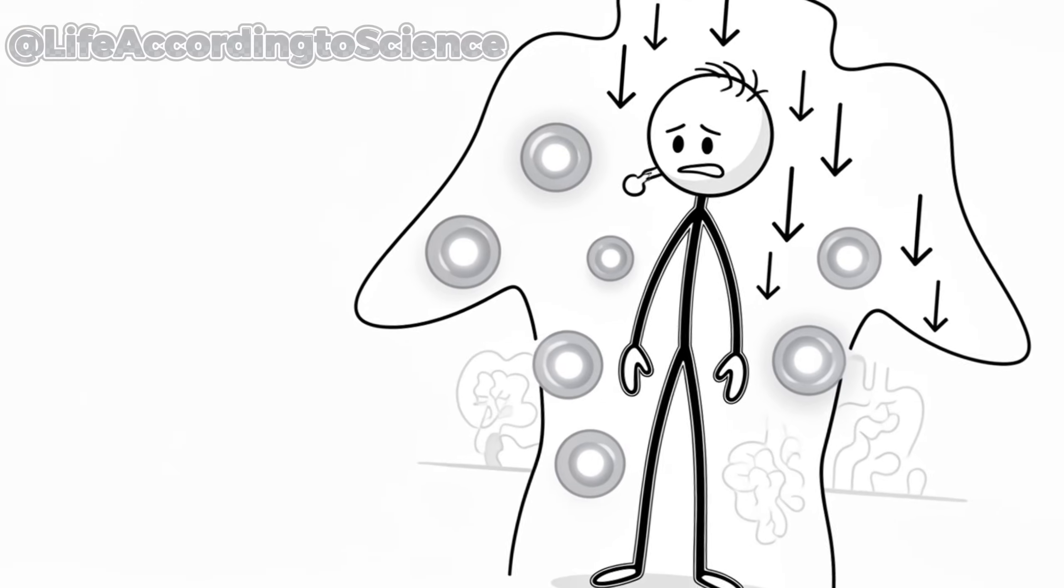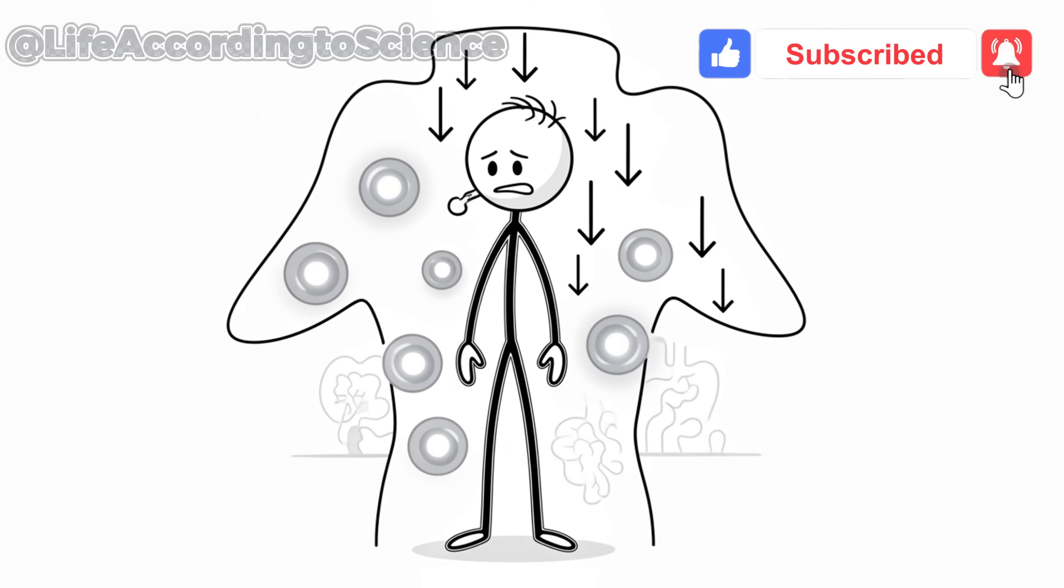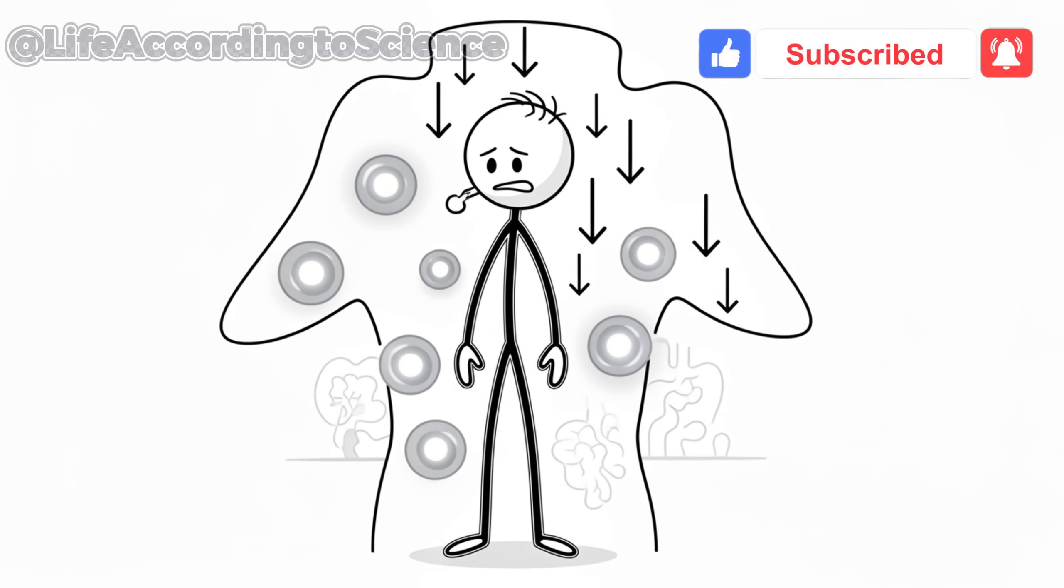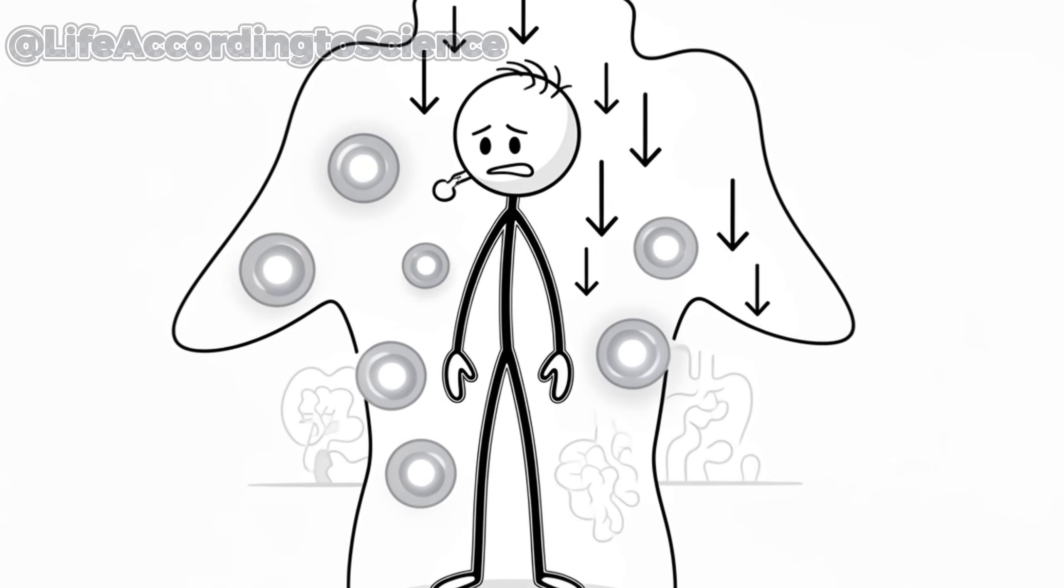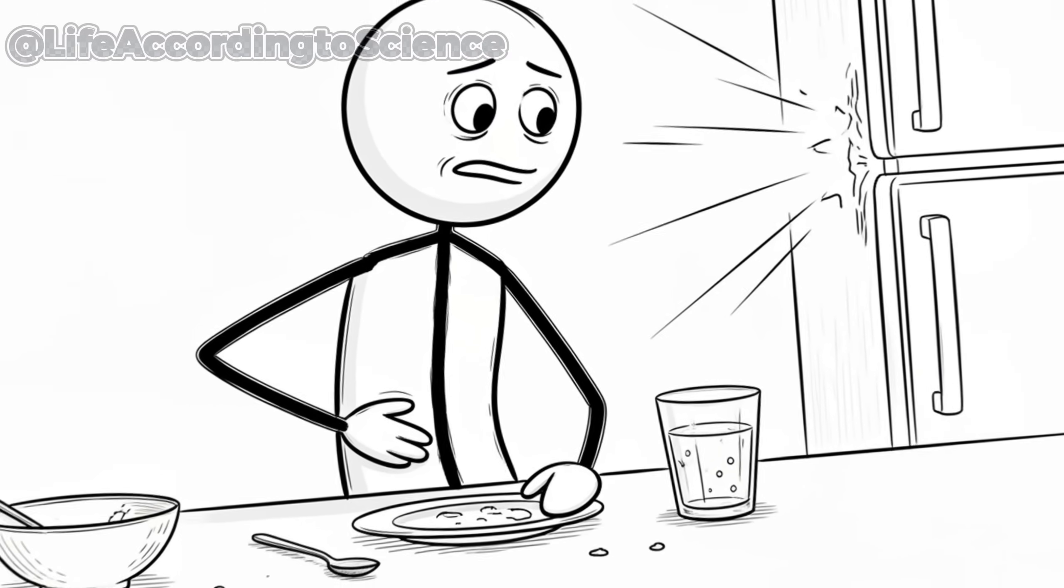Your insulin levels begin to drop, signaling every cell that the easy energy is gone. At this stage, you might feel slightly hungry or distracted. Your stomach growls. Your brain starts negotiating.